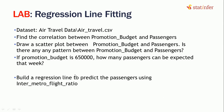We are going to use the air travel data, which we already used in our previous session to find the correlation. We are going to find the correlation between two variables: promotional budget and the number of passengers. Then we will plot a scatter plot between promotional budget and passengers to validate our correlation. Next, we will try to build a model that will allow us to predict, with a random value of promotional budget which is 650,000, how many passengers can be expected that week.